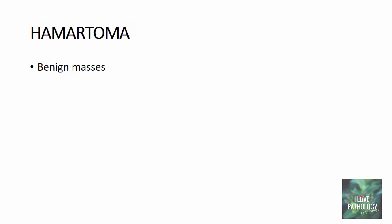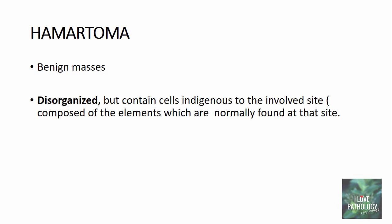Hamartoma is basically a benign mass of tissue where the characteristic feature is disorganized cells. This mass contains cells which are indigenous to the involved site — that means these tumors are composed of elements normally found at that site, but they are haphazardly arranged. The most common examples are hamartomas in the lung, heart, and breast.